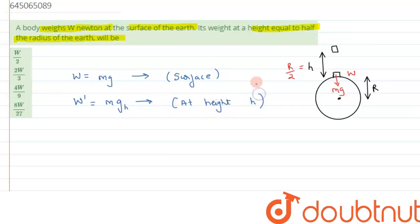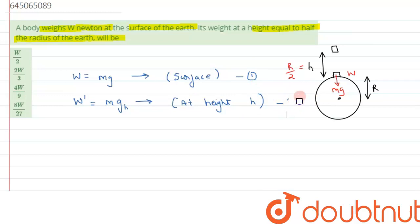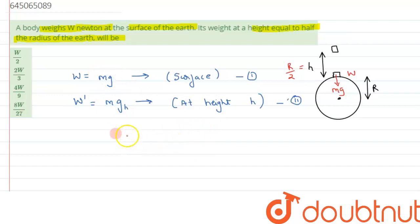Let's call W = mg as equation one, and W' = mg_h as equation two. First, we are interested in finding the value of g_h, and once we calculate g_h, we can find the value of W' at that height.